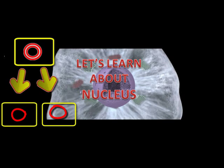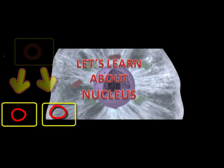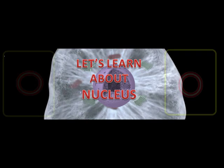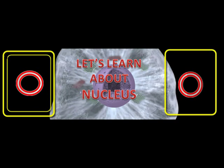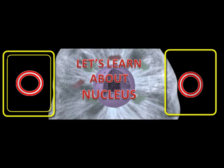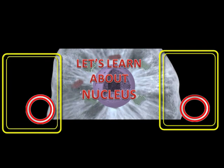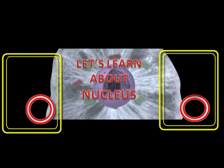It is oval or spherical in shape. In animal and young plant cells it lies in a central position, and in mature plant cells it lies towards the periphery.